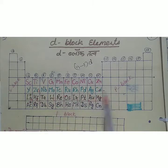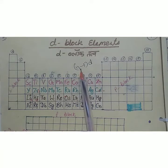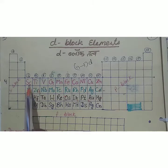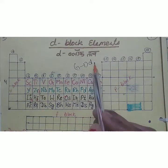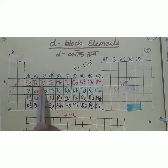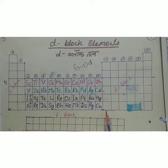There are four series of d block elements, each containing 10 elements. Here n is the outermost shell in which the s subshell is filled. For the fourth period, n=4, so n-1 = 3, meaning 3d orbitals are filled — this is the 3d series. Similarly, yttrium to cadmium is the 4d series, lanthanum to mercury is 5d, and actinium to copernicium is the 6d series. In total there are 40 d block elements.